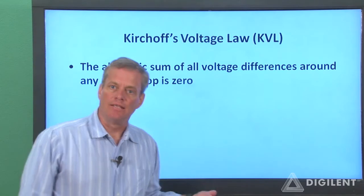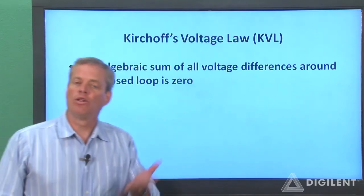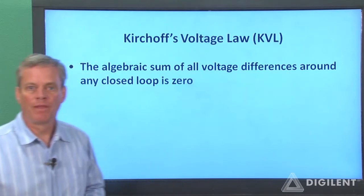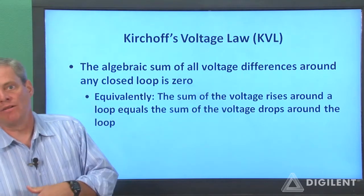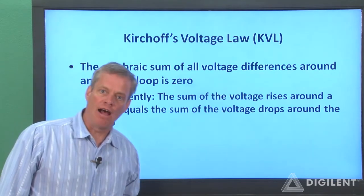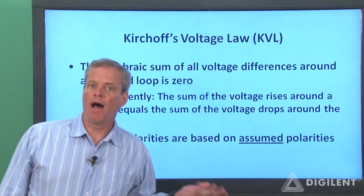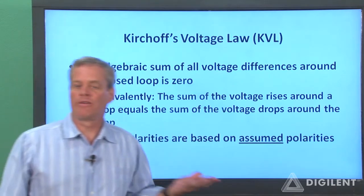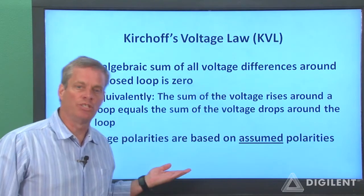Remember that Kirchhoff's voltage law states simply that the algebraic sum of all the voltage differences around any closed loop in a circuit is zero. This is equivalent to saying that the sum of the voltage rises around a loop is equal to the sum of the voltage drops. The decision as to whether voltages are positive or negative or whether they're considered to be rises or drops is based on the assumed voltage polarities.